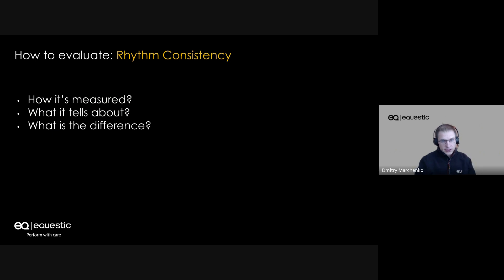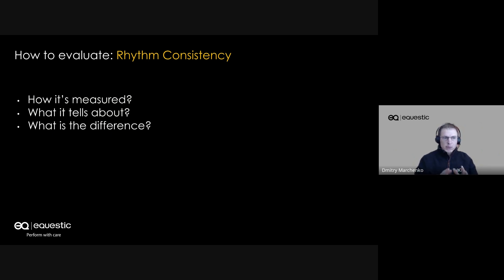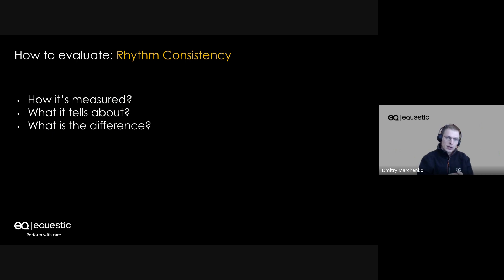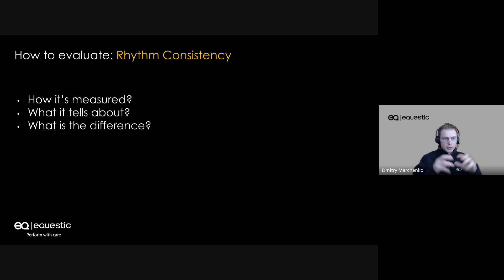Let us start with rhythm consistency. I believe you already know how it's measured, but let us touch on this a little bit. The rhythm metric is measured by the steps a horse is doing on every gait. Equistique, the saddle clip, counts this very precisely. But there is one caveat: Equistique cannot project the rhythm per second — it projects the rhythm for the whole training session.